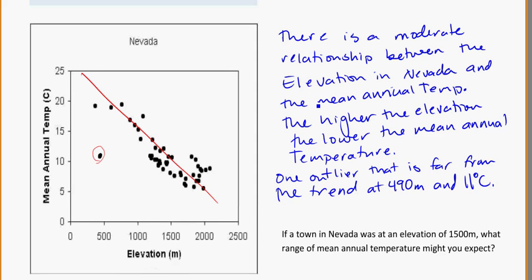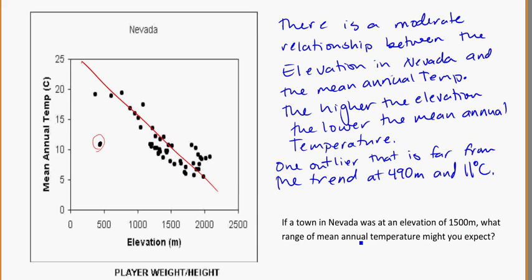One more thing that comes up from time to time: if a town in Nevada was at an elevation of 1,500 meters, what range of mean annual temperatures might you expect? Part of the big story is making predictions. The line of best fit tells me the higher I am in elevation, the lower my temperature generally. So I'd go to 1,500 meters, look at the data points in that area, and take the lowest and highest in that range — roughly 8 degrees to roughly 13 degrees Celsius.